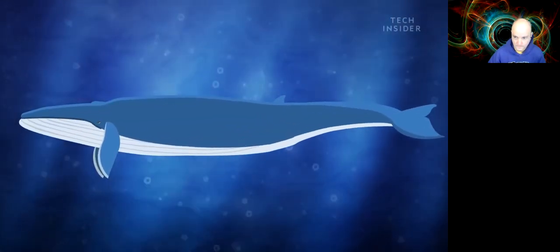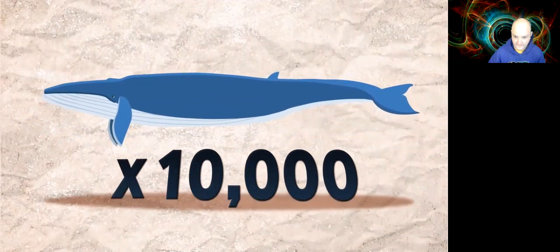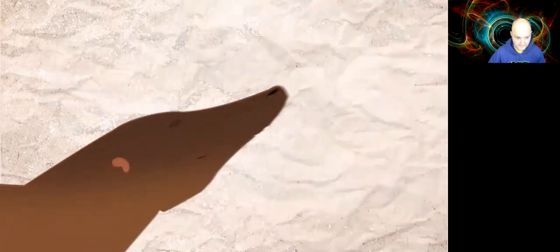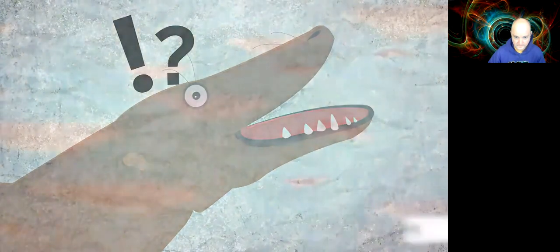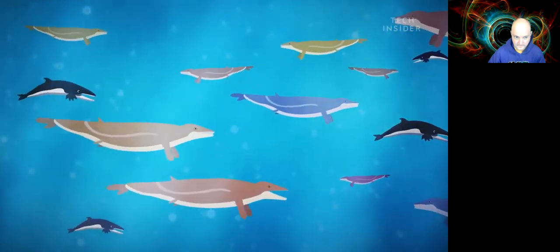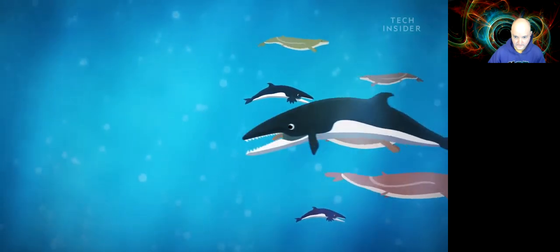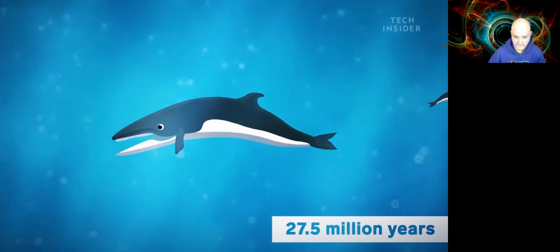Today a blue whale is 10,000 times more massive than the Pakicetus was. But this transformation wasn't as gradual as you might think. In fact, over the next 37 million years or so, whales grew increasingly diverse but their size remained small. For example, one of the first whales with baleen instead of teeth was only 18 feet long.